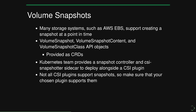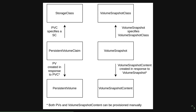Those three CRD API objects are very similar to the traditional persistent volume API objects. Looking at them side by side: on the left side are the traditional API objects for managing storage. A StorageClass provides a way to encapsulate parameters for a user storage request, so you can offer different types of storage for different workloads.